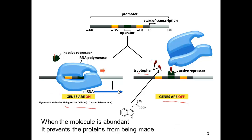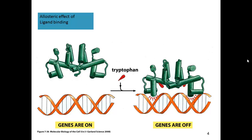The default state is: let's make more tryptophan. The negative feedback is: we've got too much tryptophan — stop for a little bit. And this all happens automatically, since the molecule being made is also the molecule that binds to the repressor to induce the conformational change.